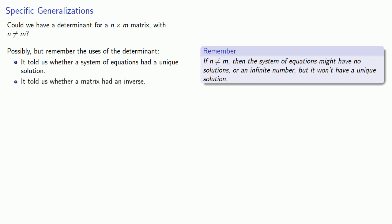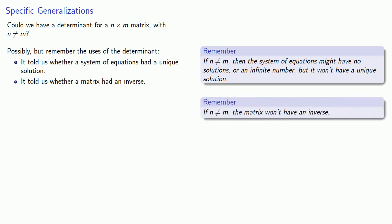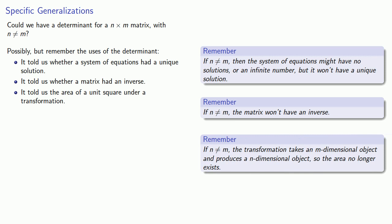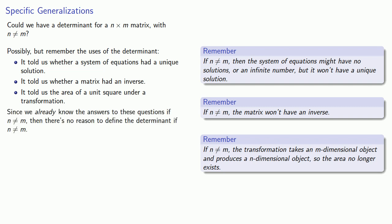The determinant also told us whether a matrix had an inverse. But if n is not equal to m, the matrix won't have an inverse. And finally, it told us the area of a unit square under a transformation. But if n is not equal to m, the transformation takes an m-dimensional object and produces an n-dimensional object, so the area no longer exists — we don't talk about the area of a cube. And so determinants only make sense for square matrices.